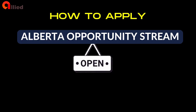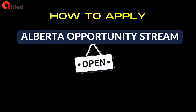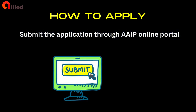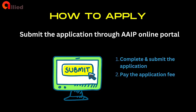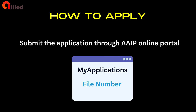How to apply: the Alberta Opportunity Stream is always open to new applications. Eligible candidates can submit an application at any time, and applications are processed on a first-come, first-served basis. You can submit the application through the AIP online portal. The AIP only accepts Alberta Opportunity Stream applications online. You must use the AIP online portal to complete two steps: complete and submit the online application, and pay the application fee. A file number will be provided to you in the portal and will also be listed on the My Applications page.